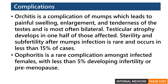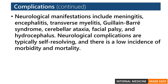Oophoritis is an inflammation of the ovaries. It is a rare complication amongst infected females, with less than 5% developing infertility or premature menopause. Central nervous system involvement is the most common extrasalivary complication of mumps. Its presentation is most often as aseptic meningitis. Other complications include encephalitis, transverse myelitis, Guillain-Barré syndrome, cerebellar ataxia, facial palsy, and hydrocephalus. Neurological complications are typically self-resolving with a low incidence of morbidity and mortality.